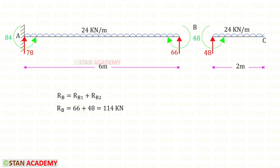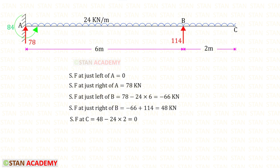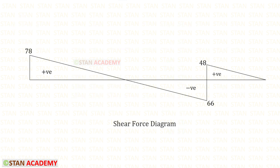Now let us consider the overhanging part as well. To find RB we add RB1 and RB2, giving 114 kilonewtons. Using the right-hand side rule, we find the shear force values. Here you can see the shear force diagram. At one point the shear force becomes zero, and at that point there will be a maximum positive bending moment. Let us make a section at that point and find the distance.